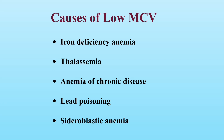People with thalassemia either have no signs and symptoms, or they can have mild to severe signs and symptoms depending on whether they have an alpha or beta gene mutation and the number of mutations they have. Anemia of chronic disease can cause low MCV. Chronic conditions that lead to this type of anemia include diabetes, cancer, infection, immune disease, kidney disease, arthritis, etc.